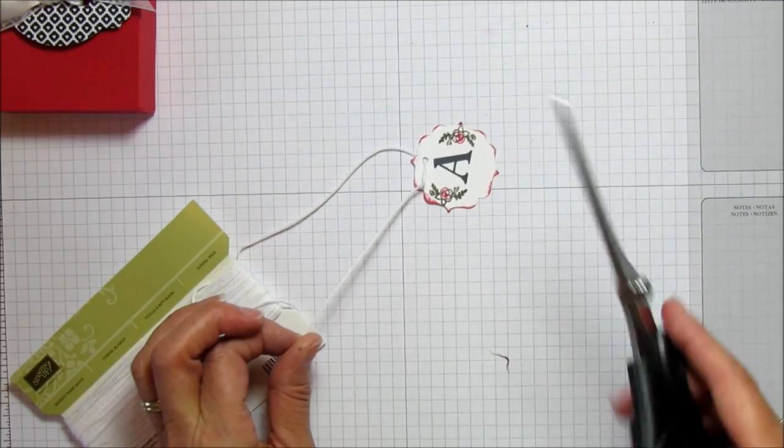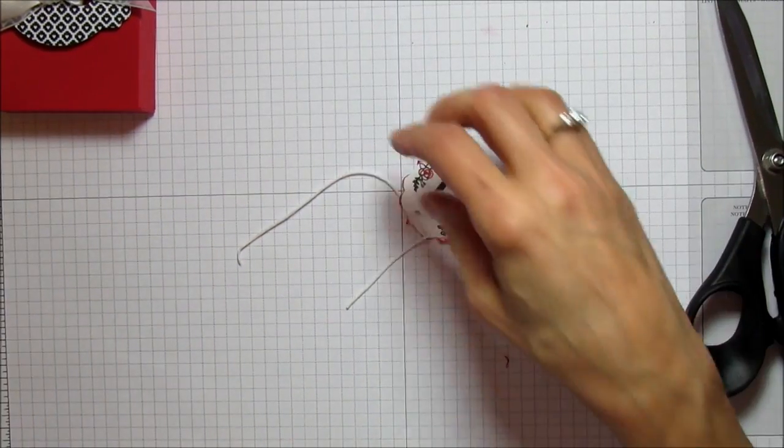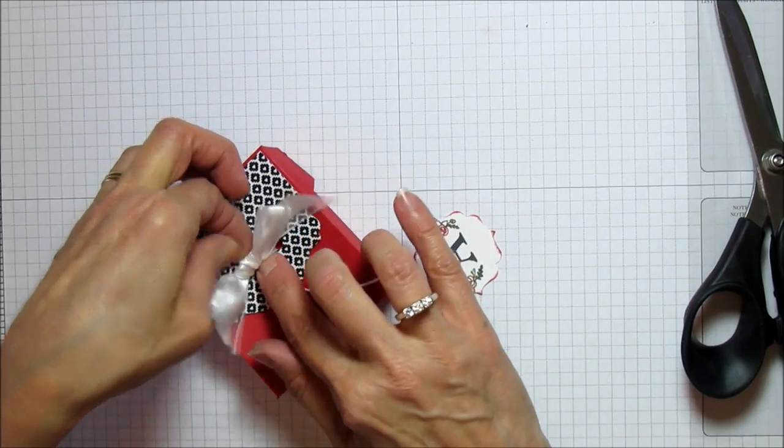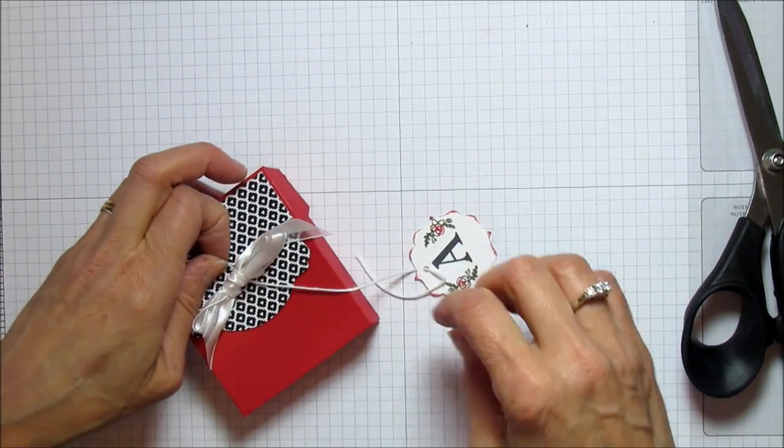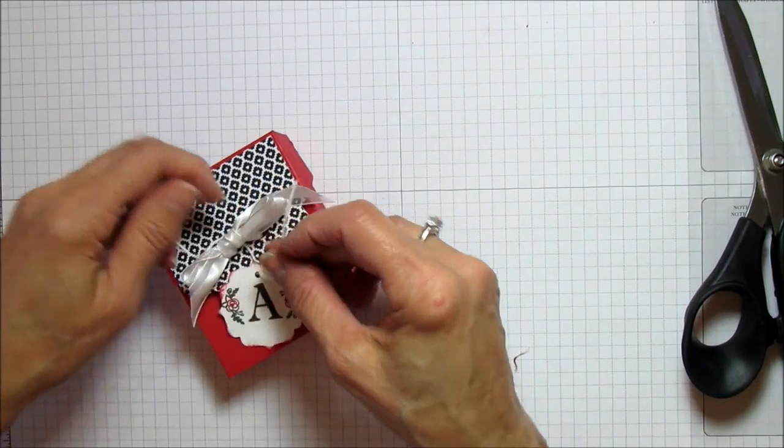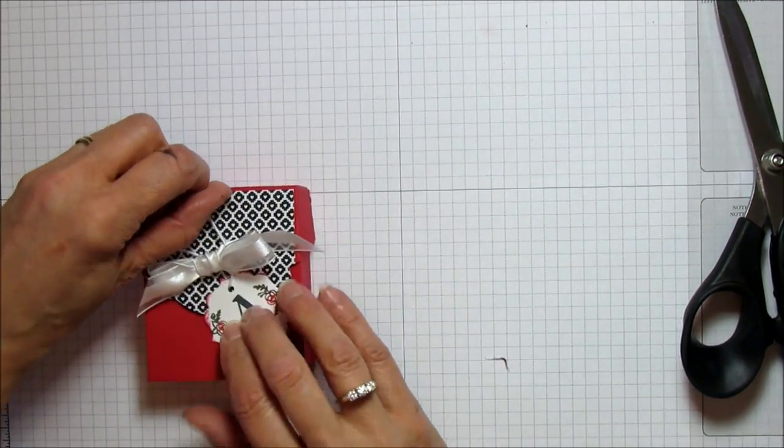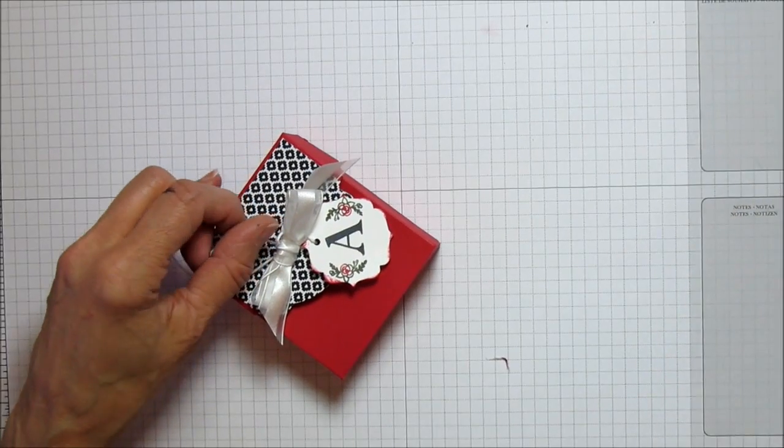I'm going to grab some of our whisper white baker's twine. We don't need that much. We're going to just attach it underneath this bow. I just put it underneath like all the ribbon and everything - you won't be able to see it.